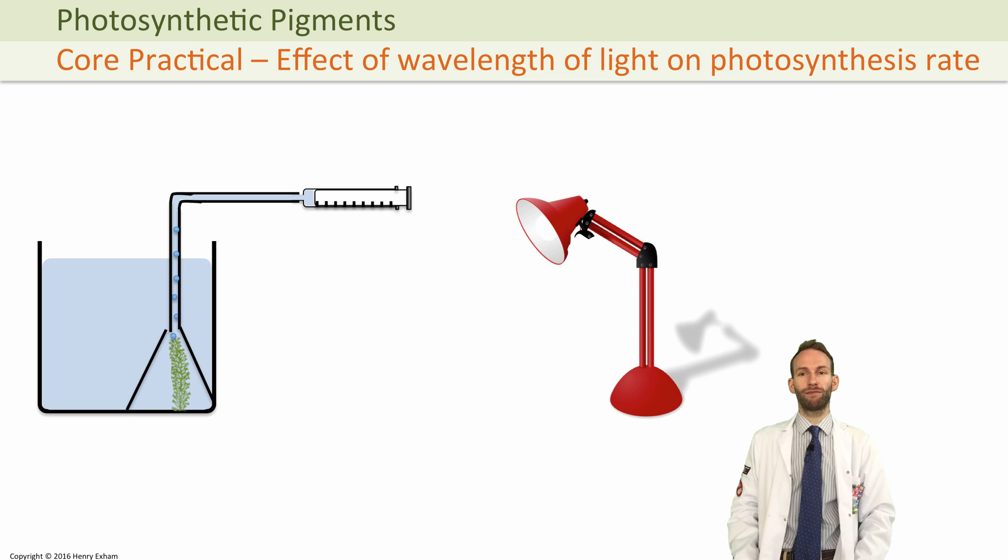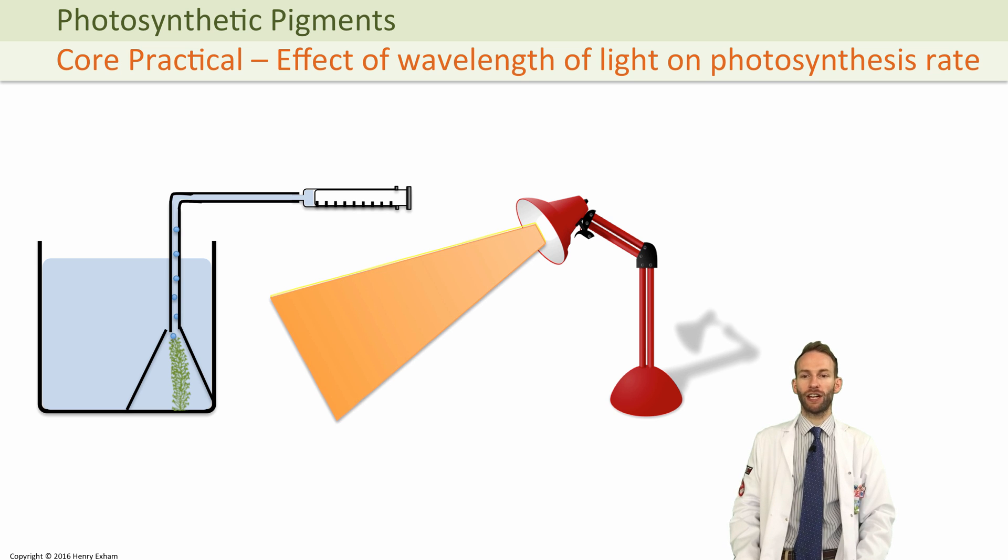And if you collect the volume of that oxygen in a given time, that will give you a rate. And what you can then do is change the wavelength of that light by putting different filters over the color of the lamp.